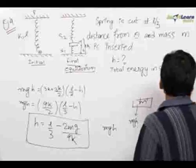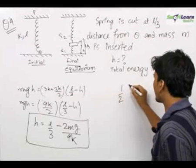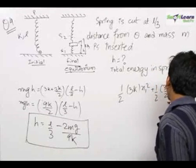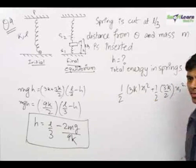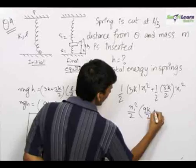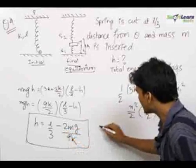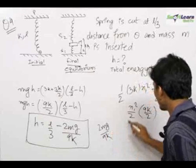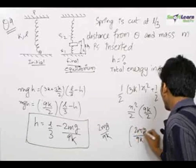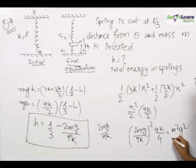To find the total energy stored in the springs, we write: ½ × 3k × x₁² + ½ × (3k/2) × x₁², since the extension and compression in both springs are the same. This simplifies to x₁² × (9k/4). Now x₁ = L/3 − h = 2mg/(9k). Therefore the total energy becomes (2mg/9k)² × (9k/4) = m²g²/(9k).